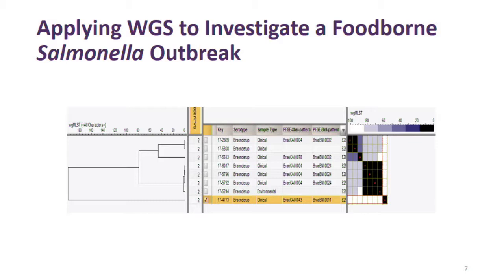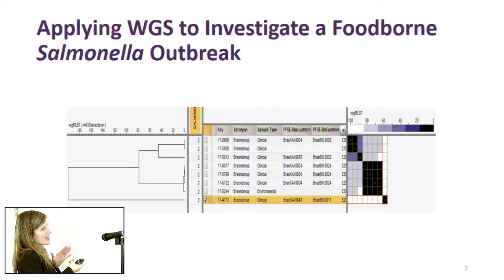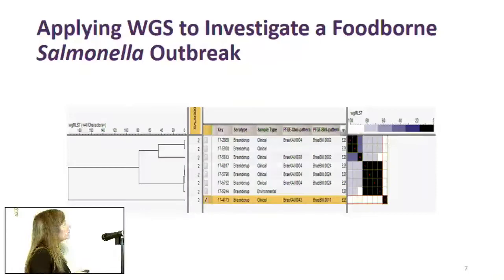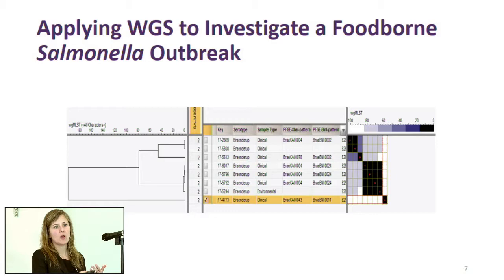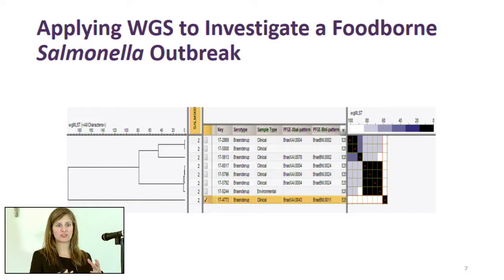Here's an example of WGS used in a recent outbreak investigation — a national outbreak of Salmonella Brandrup, another serovar of salmonella. Presenting just the BC cases: we have eight cases — seven clinical and one food sample. Using a bioinformatics tool called whole genome multilocus sequence typing, or WG-MLST, we build a clustering or phylogenetic tree showing genetic relatedness. The scale shows the number of differences at different alleles across the genome. Among these eight cases there were over 180 differences, indicating some strains are not related to one another.